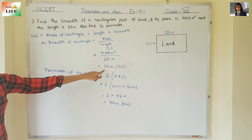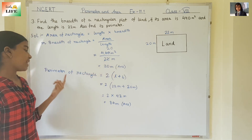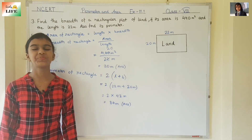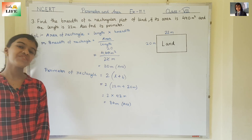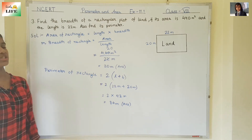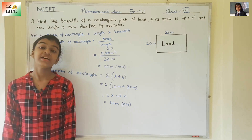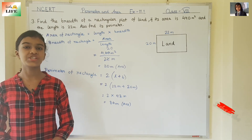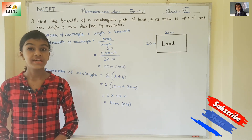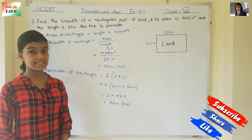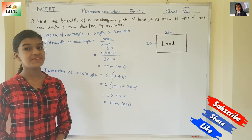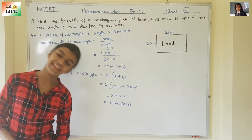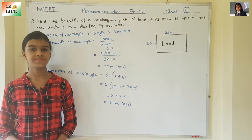We have found the breadth — it is 20 meter — and the perimeter is 84 meter. With this, we have completed question number 3. In the next video, I am going to be back with question number 4. If you like this video, click on the like button, and to stay with me, please click on the subscribe button. Thank you, see you next. Bye bye.